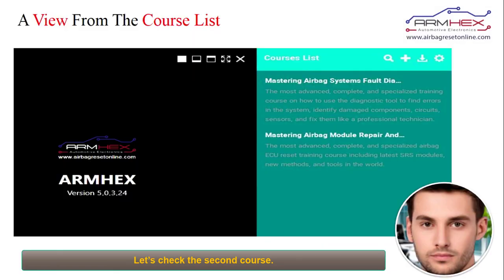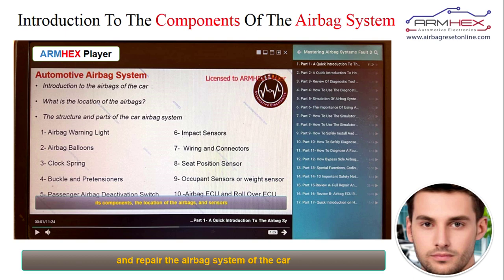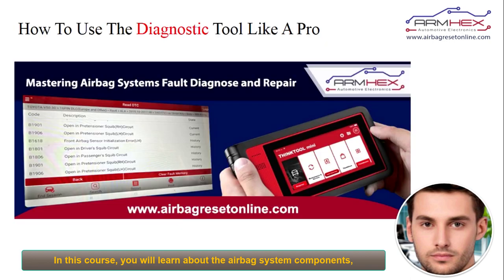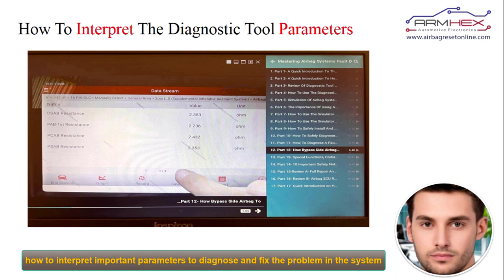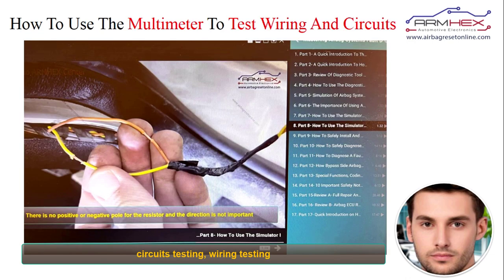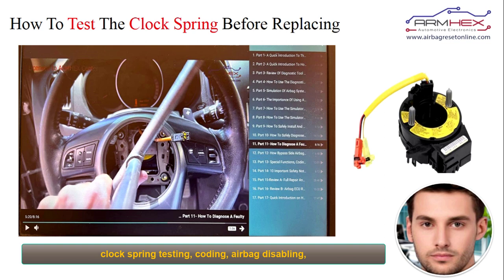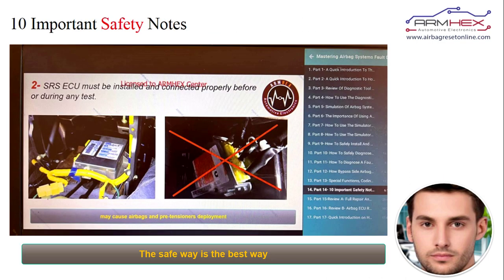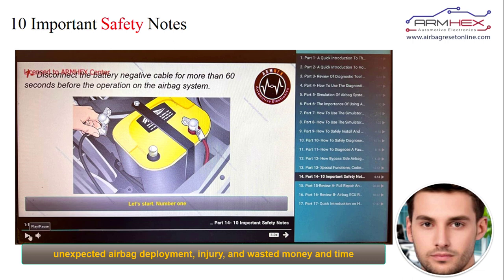Let's check the second course. The course is about how to diagnose and repair the airbag system of the car. In this course, you will learn about the airbag system components, how to use the diagnostic tool like a pro, and how to interpret important parameters to diagnose and fix the problem in the system. All the important techniques and methods like simulation, airbag bypassing, circuits testing, wiring testing, clock spring testing, coding, airbag disabling, and many other topics are included. You will learn 10 important safety tips to avoid unexpected airbag deployment, injury, and wasted money and time.